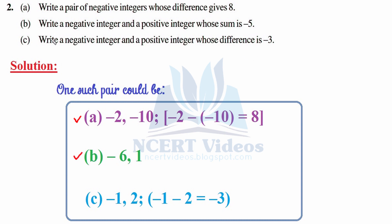Part c: Write a negative integer and a positive integer whose difference is minus 3. We subtract; take minus 1 and positive 2. Since the signs are the same we add them, giving 3, and the sign comes from the negative number, so the answer is minus 3. That was question 2.